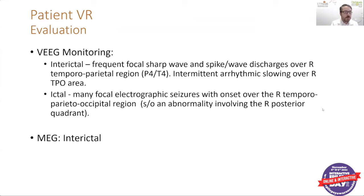For EEG monitoring of this patient, looking for interictal data — meaning spikes — she had focal sharp wave discharges over the right temporal parietal region, as well as some slowing over that same right posterior area. During her seizure activity, she was noted to have onset over the right parietal occipital, right posterior quadrant.